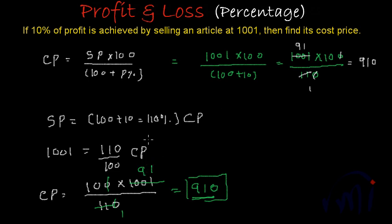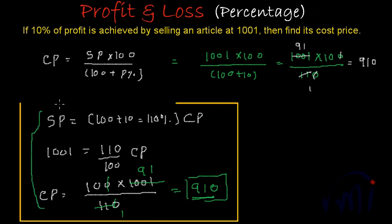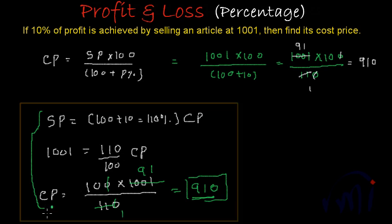Actually here you need not to remember the formula, we are following the first principle of percentage. And what is that? Here actually the sale price is 10% more than the cost price, that means sale price is 110% of the cost price, and 110% is the fraction whose numerator is 110 and denominator is 100. So 1001 is equal to 110 by 100 of CP. From here you can directly find the cost price. So this is the shortcut method because you can directly arrive to this expression and the calculations become faster.